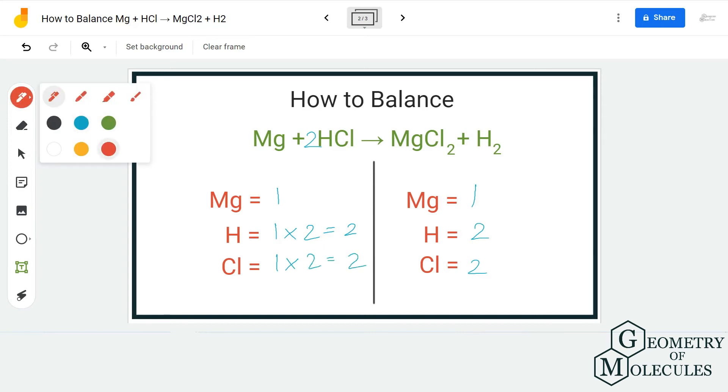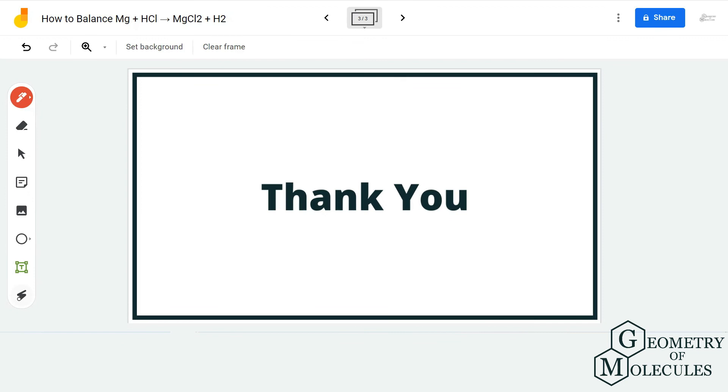Now this equation is balanced because we have the same number of magnesium, hydrogen, and chlorine atoms on both sides. I hope this video helps you understand. For more videos on Lewis structure, molecular geometry, and polarity of molecules, make sure to subscribe to our channel. Thanks for watching.